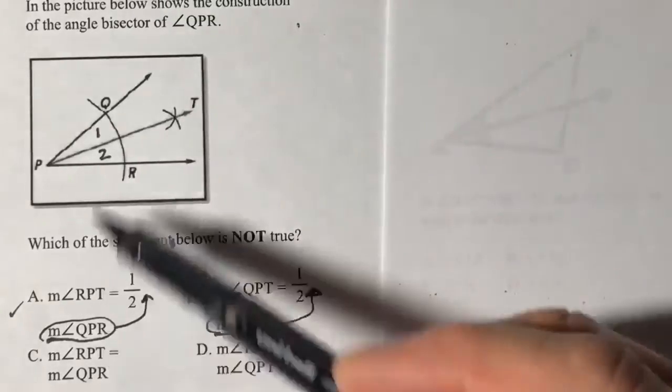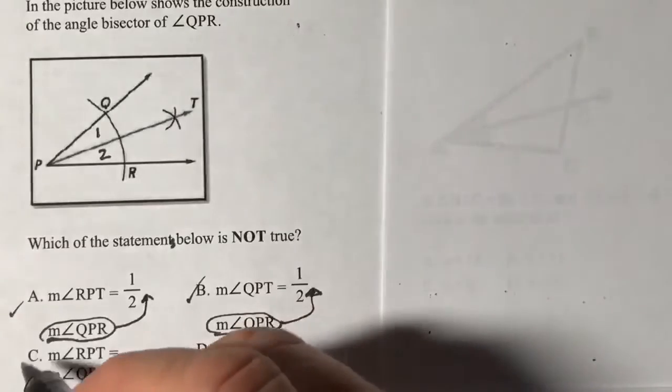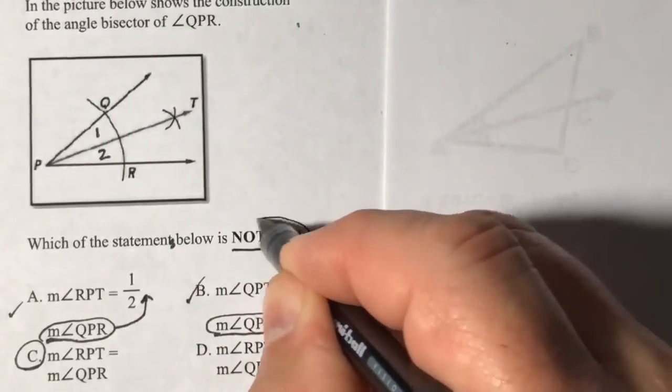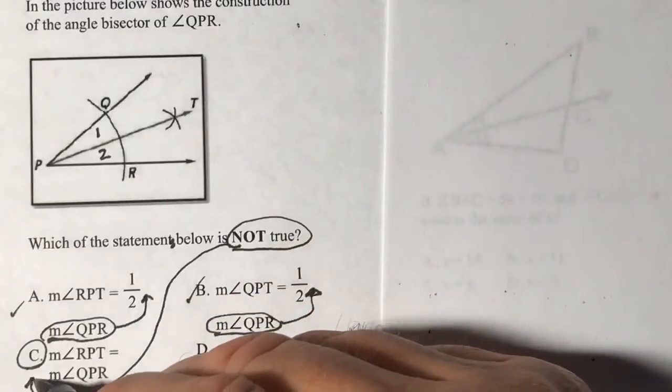Had it said QPT, then that would have been true. This one here is my answer because we want not true. This answer here is not true.